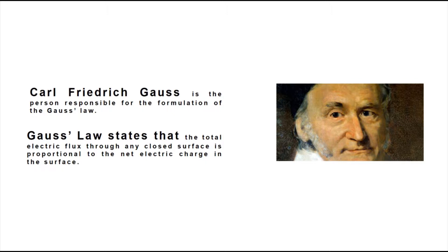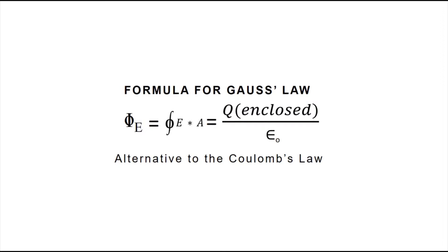Gauss's law states that the total electric flux through any closed surface is proportional to the net electric charge in that surface. The formula for Gauss's law is given by the electric flux equals the closed integral of the electric field multiplied by area. It is also equal to the charge enclosed over the permittivity of space, or epsilon naught.